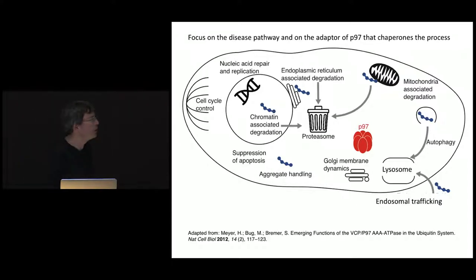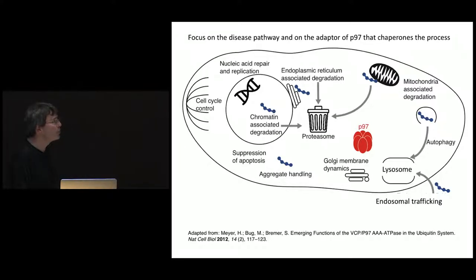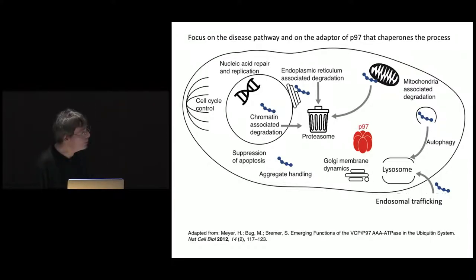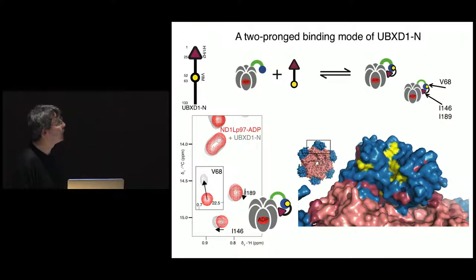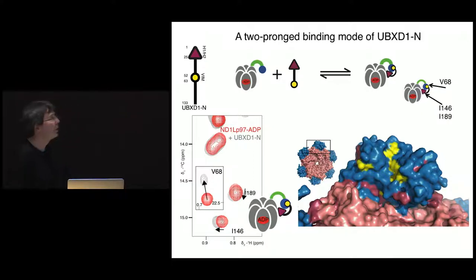P97 is a very important molecule and we wanted to understand how downstream this up-down equilibrium could affect its functions. The disease mutants we're looking at are associated with lysosomal degradation. We wanted to see how the adapter UBXD1 — which causes P97 to go into a mode involved in lysosomal degradation — interacts with P97 in these disease mutants. Is there some sort of impaired binding brought about by these disease mutations?